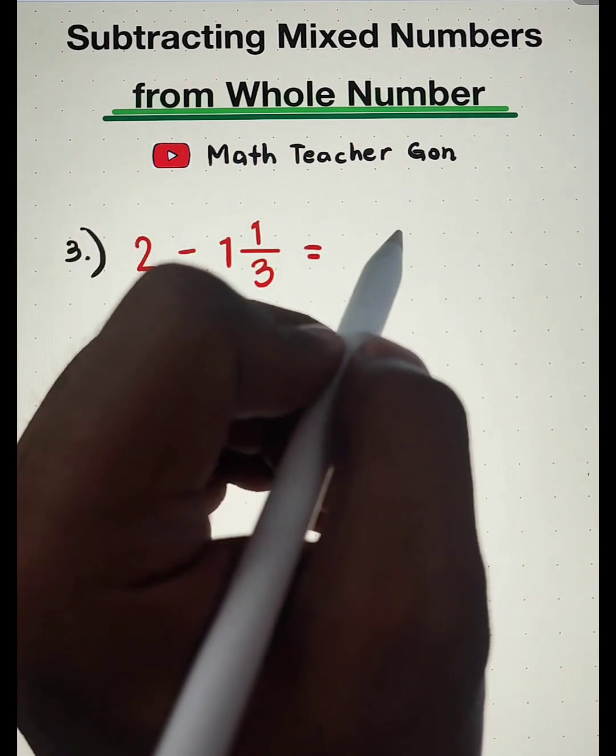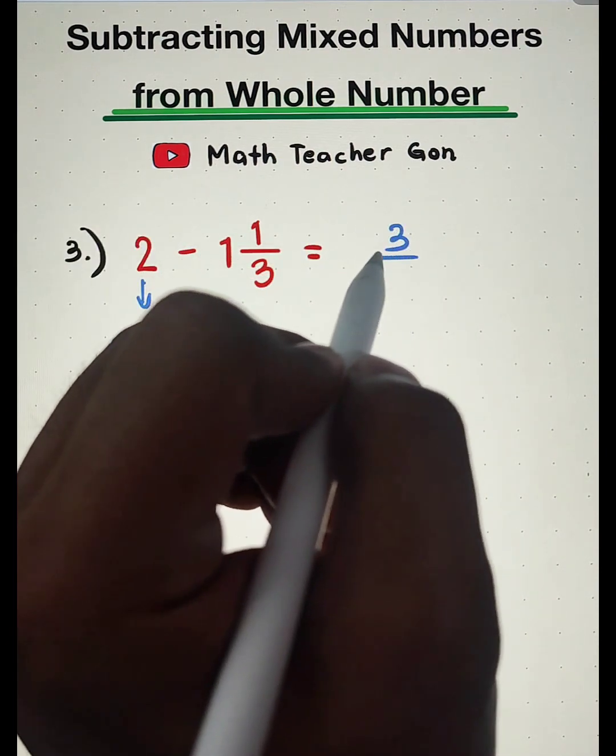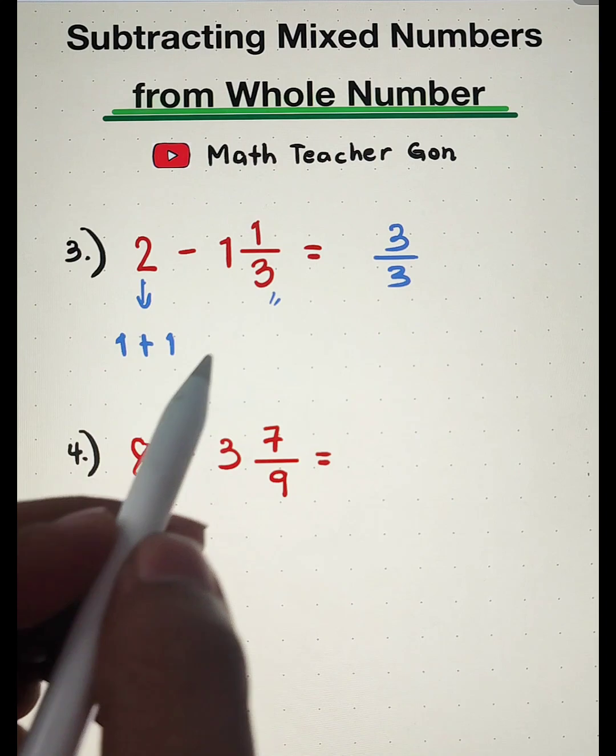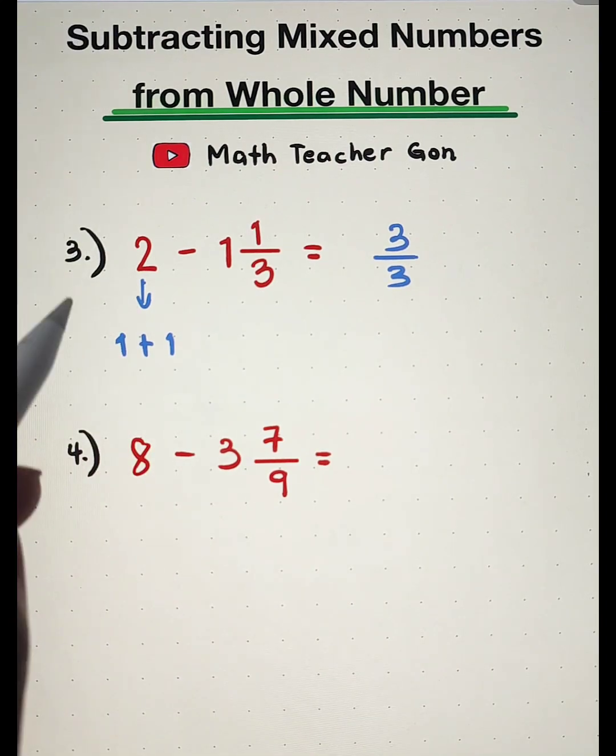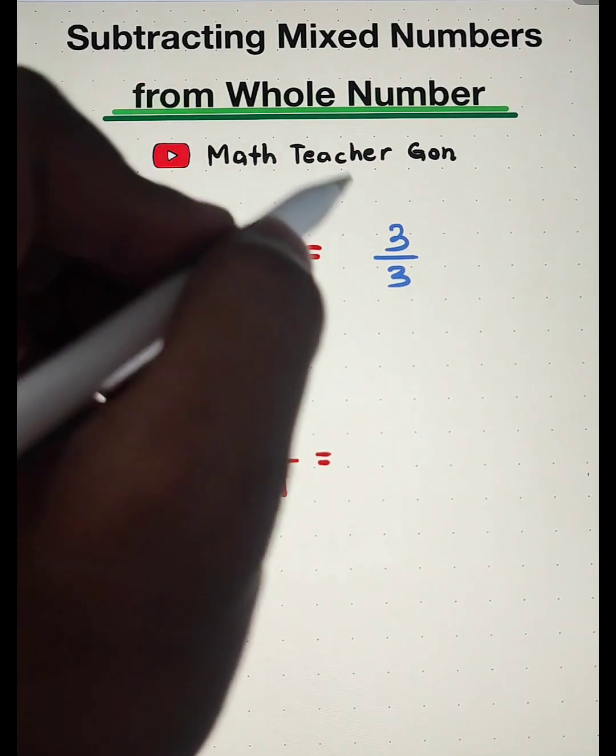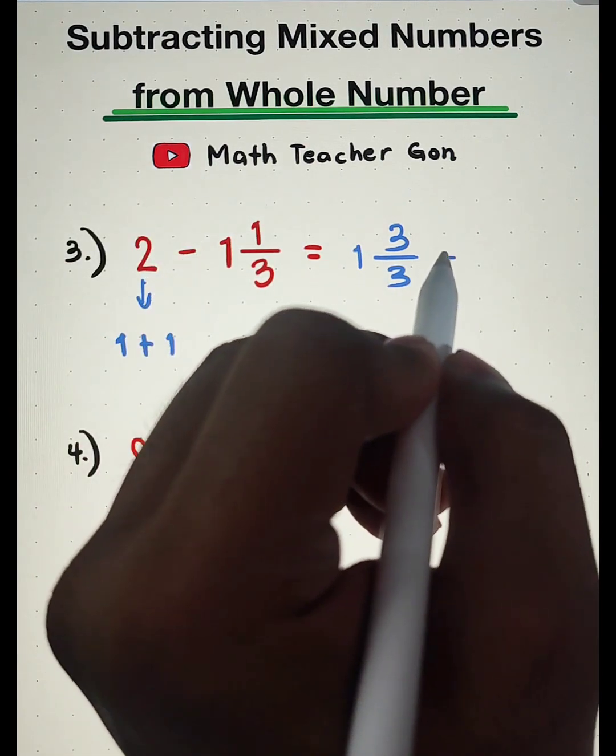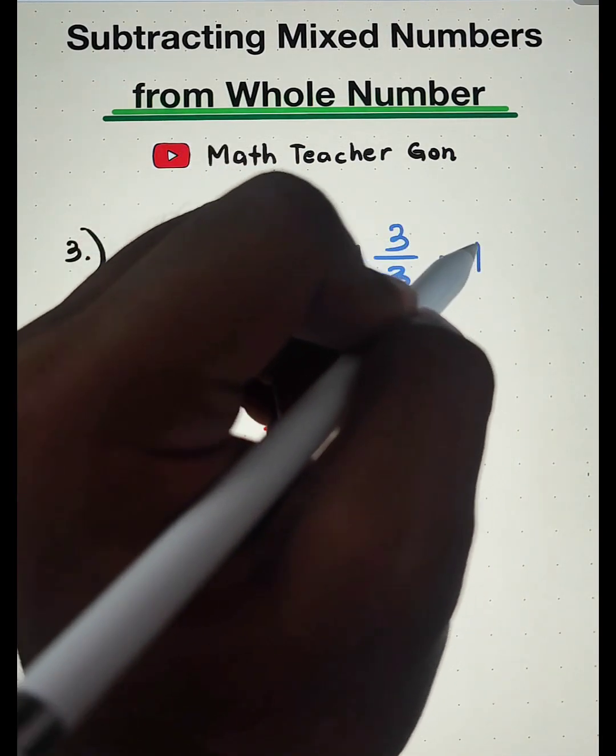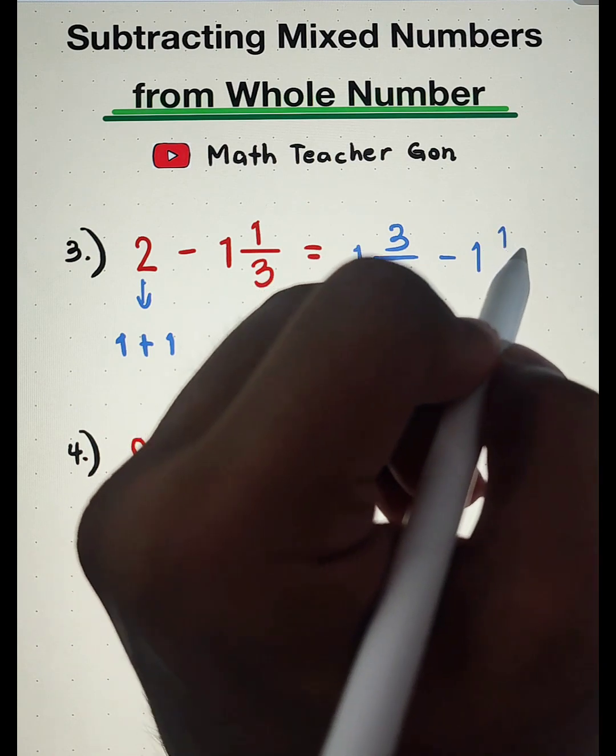This 1 will be converted into 3 over 3 because of your denominator of 3. Then attach this whole number 1.